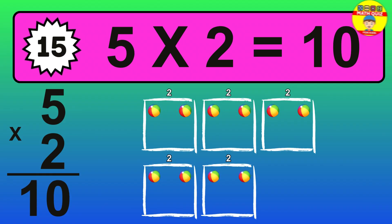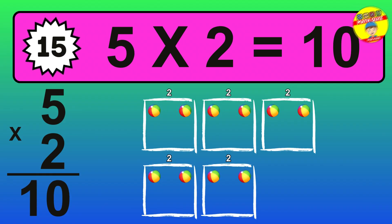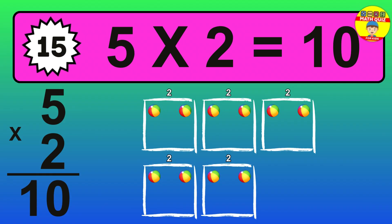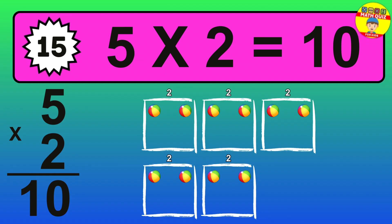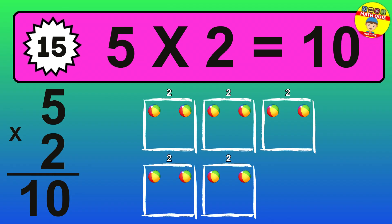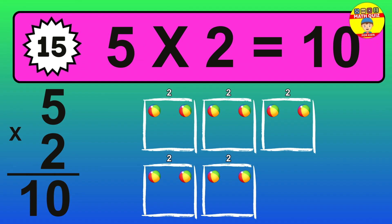The answer is 5 times 2 is 10. To calculate, we have 5 groups with 2 balls each one. So, how many balls do we have? 10 balls.